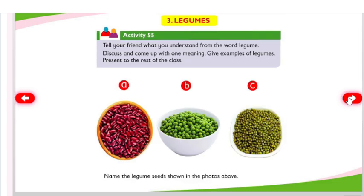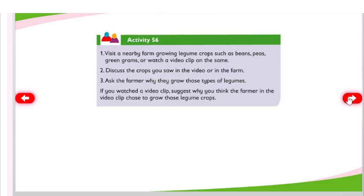Legumes. Activity 55: Tell your friend what you understand from the word legume. Discuss and come up with one meaning. Give examples of legumes. Present to the rest of the class. Name the legume seeds shown in the photos above.